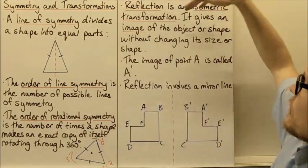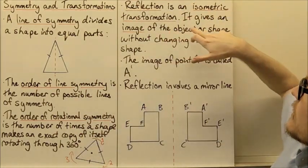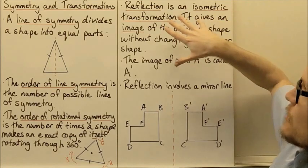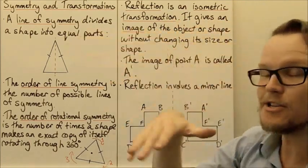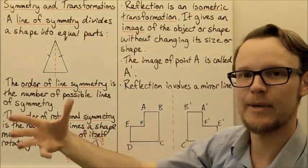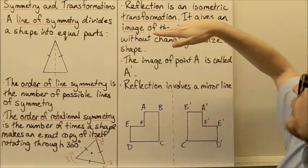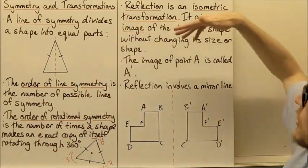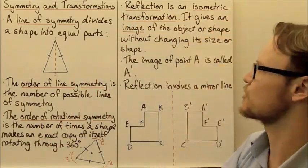So reflection is an isometric transformation that gives an image — a picture or a copy of the object or shape — without changing its size or shape.